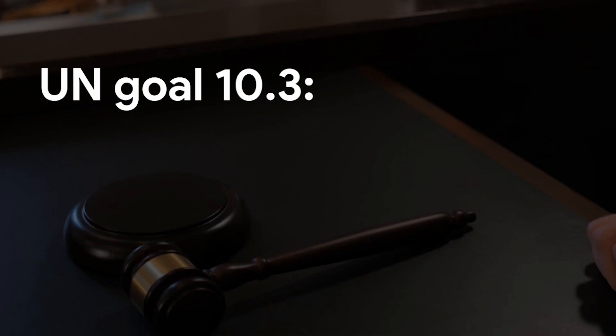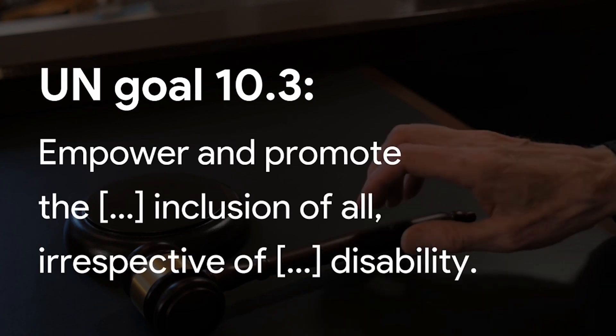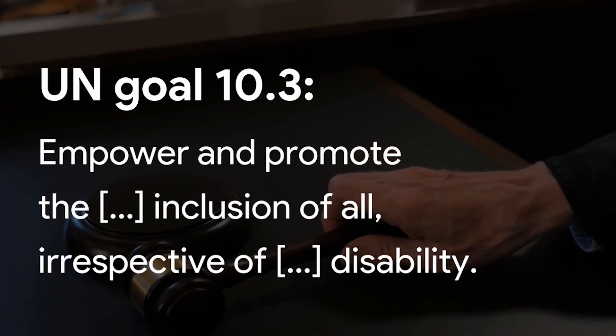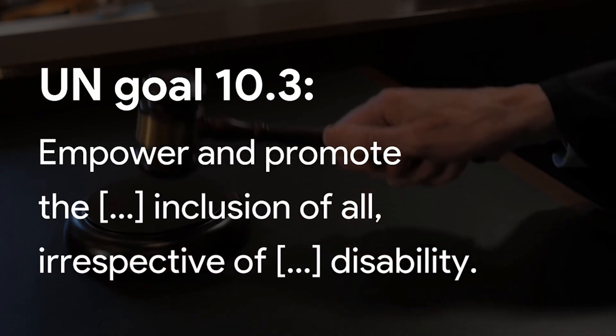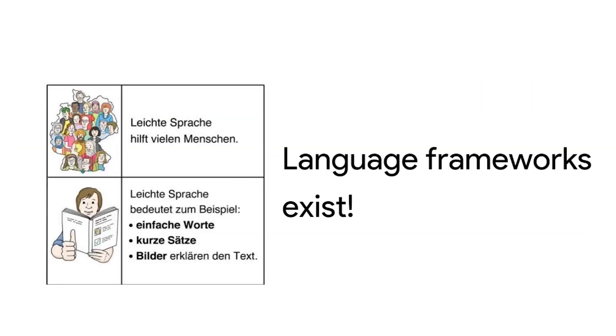UN Goal 10.3 specifically states to empower and promote inclusion of all, including people with disabilities. When talking to experts, we learned that there are simplified language frameworks that help with functional illiteracy. However, these texts are translated by hand, so only very few texts are made accessible.